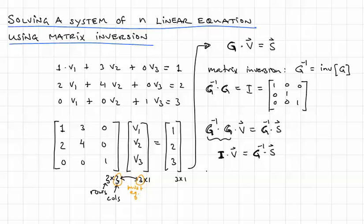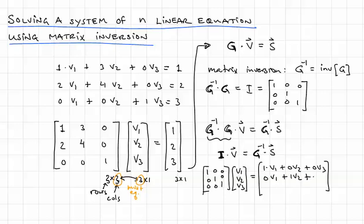And what is I times V? Well, if we have 1's on the diagonal and 0's elsewhere, then when we multiply that by vector V having elements V1 through V3, we get 1 times V1 plus 0 V2 plus 0 V3 for our first row. And we get 0 V1 plus 1 V2 plus 0 V3 for the second row, and 0 V1 plus 0 V2 plus 1 V3 for the third row. And this gives us our vector V: V1, V2, V3.